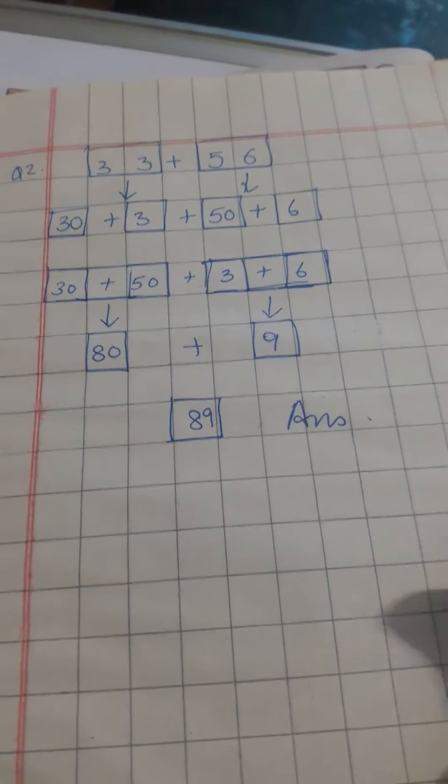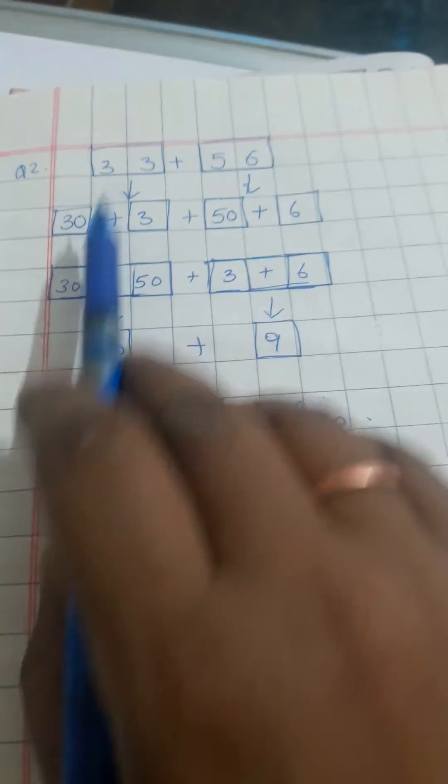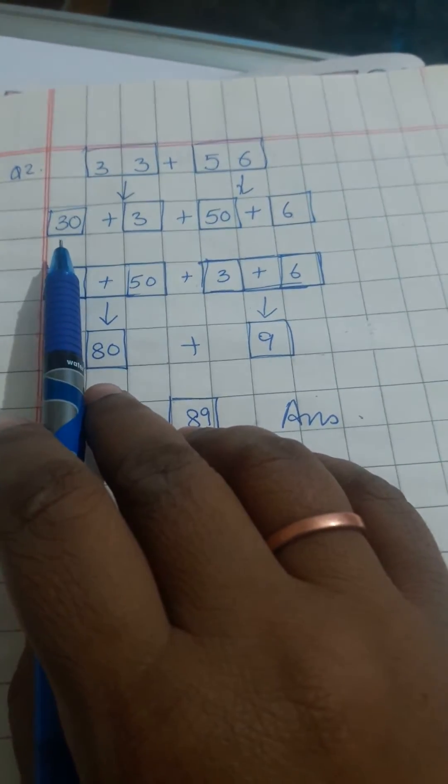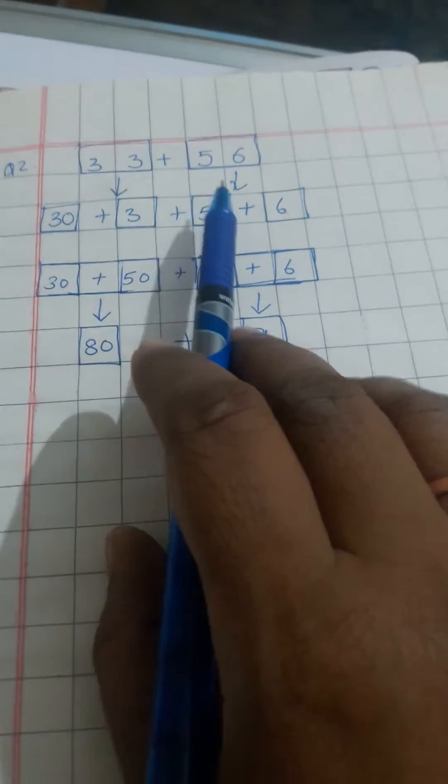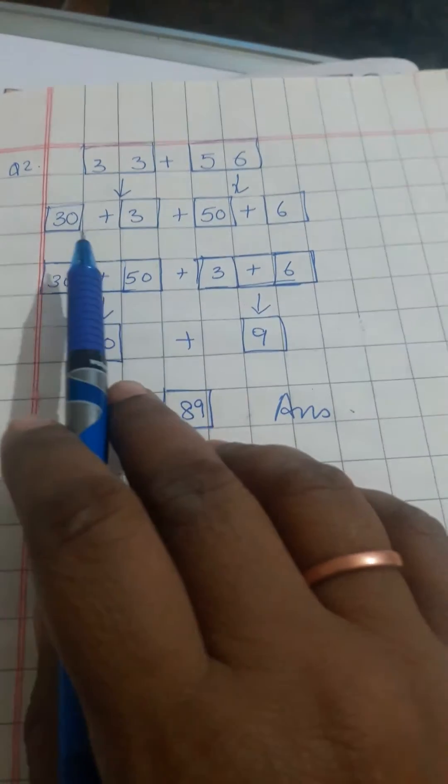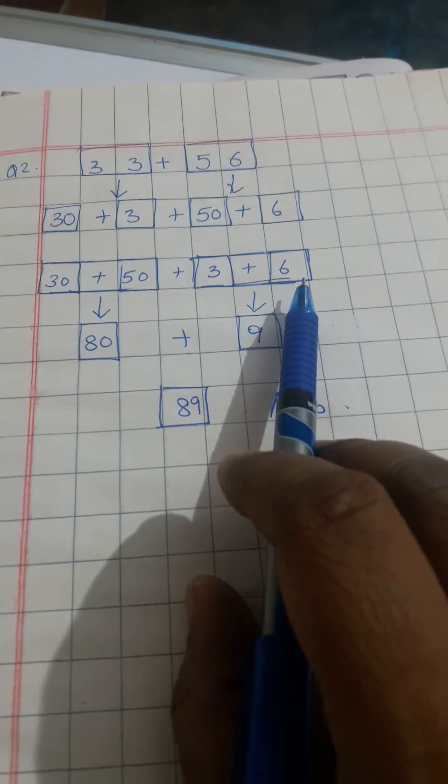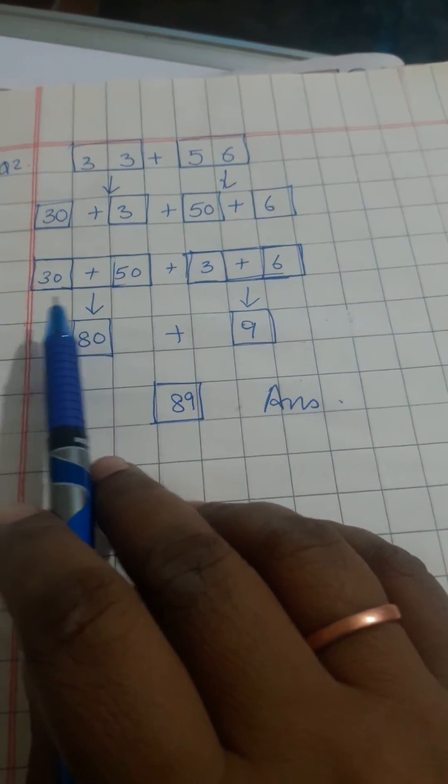Now we will break 33 will become 30 plus 3 and 56 will become 50 plus 6. Now again we will put tens numbers together, that is 30 and 50 together, and 3 and 6 together. Now we will add 30 plus 50 equals 80 and 3 plus 6 equals 9.